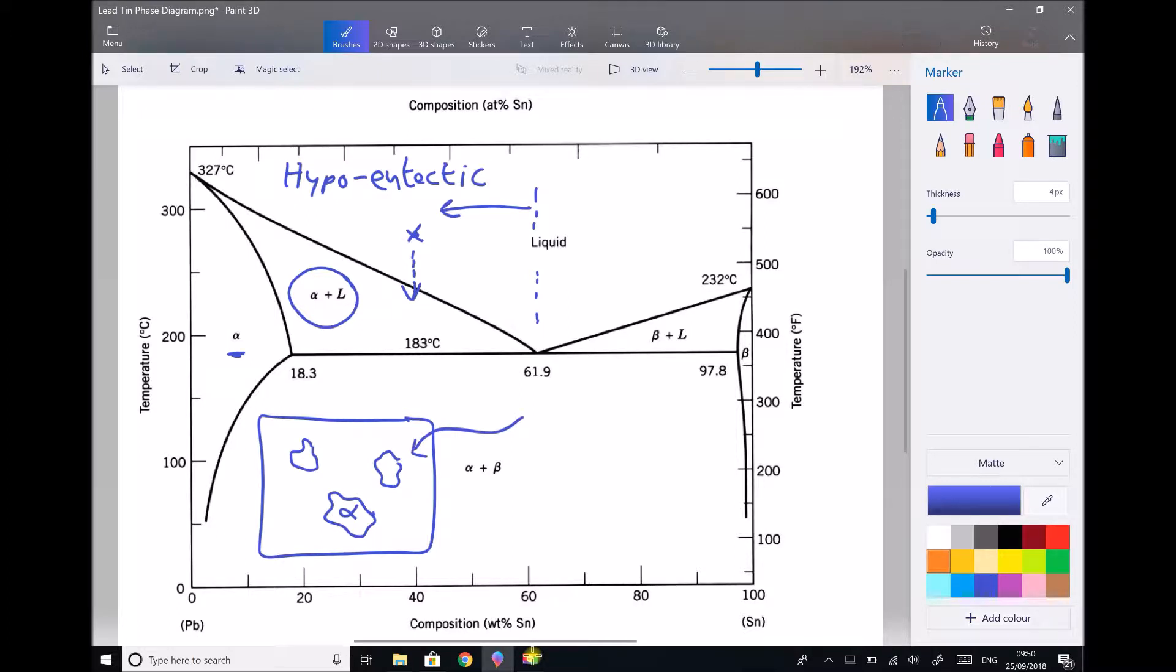If we have alpha plus beta, and we're decreasing the amount of alpha in the liquid, then the composition of beta must be increasing. So if we started with a liquid leading lead minus Pb, then the concentration, or the percentage tin, must be increasing.